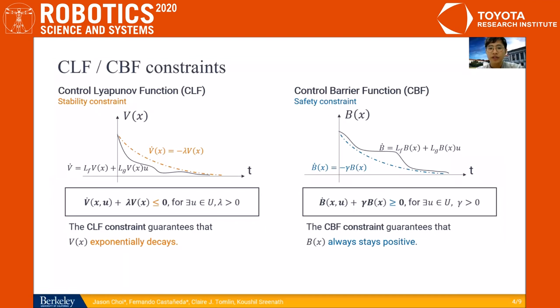These constraints are based on control Lyapunov functions and control Barrier functions. The CLF constraint guarantees that the input obtained from the optimization problem will exponentially stabilize the system. In contrast, with the CBF constraints, we guarantee set invariance and therefore safety.